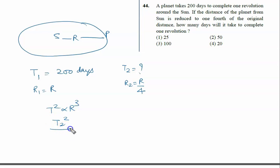So that is T2 square upon T1 square equal to R2 cube upon R1 cube. So it is T2 square upon T1 square is 200 into 200 equal to R2 upon R1 whole cube. Firstly, we will calculate R2 upon R1.